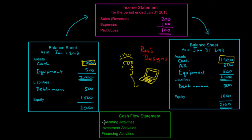The cash flow statement breaks things down into operating activities, investment activities, and financing activities. In terms of expenses, there was a cash outflow of $100. The sales were not cash sales, so in terms of operating activities there was a total outflow of cash during the period of $100. During the period, there were no net new investment activities. Also, there were no financing activities during the period — even though at the start there was a debt of $500, at the end of the period we still hadn't paid back any of that debt. Therefore, there was a total net cash outflow of $100 during the period, explaining the $1,500 at the start ending up as $1,400 at the end.